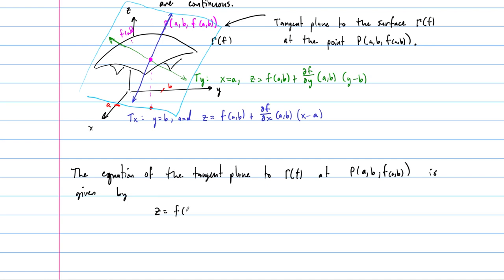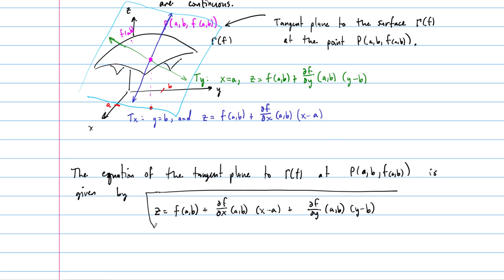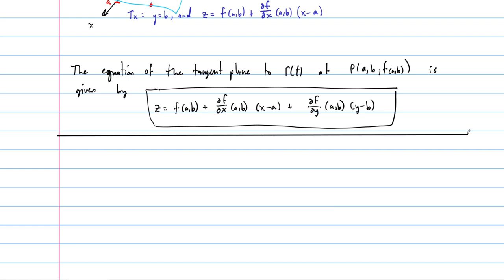The equation of the tangent plane to the surface gamma of f at point P is given by: z equals f(a,b) plus df/dx at (a,b) times (x minus a), plus df/dy at (a,b) times (y minus b). If y equals b, the second term zeros out; if x equals a, the first term zeros out. So the plane has to have both of these together. This looks just like the equation of a tangent line, but extended to a two-dimensional domain.